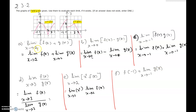So part a: limit as x approaching 2 of f(x) plus g(x). By the property of limits, it's the limit as x approaching 2 of f(x) plus the limit as x approaching 2 of g(x). For the first part, we consider the neighborhood of 2 on the graph of f(x) — the graph is approaching negative 1. So this part is negative 1. For the limit as x approaching 2 of g(x), in the neighborhood of 2 the graph is approaching 2. So negative 1 plus 2 equals 1.